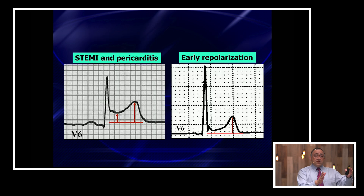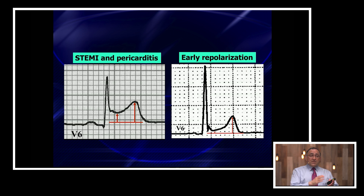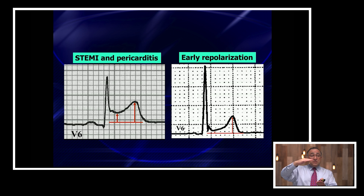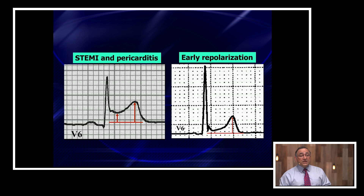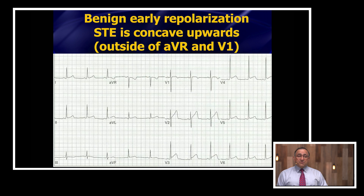Let's put these next to each other. On the left, you can see what STEMI and pericarditis look like in V6; on the right is early repolarization. Early repolarization produces just a little ST elevation compared to a big T wave, whereas STEMI and pericarditis give you a lot more ST elevation compared to a slightly taller T wave. This is a very nice pearl that appears to be quite reliable — unfortunately it only works in V6, and only if there is ST elevation in V6. If there's no ST elevation in V6, you can't use this pearl.